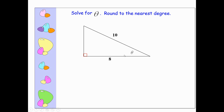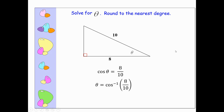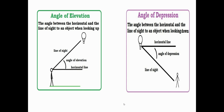When finding an angle measure, if I have the adjacent side of 8 and the hypotenuse of 10, that gives cosine of theta equals 8/10. Take cosine inverse of both sides — theta equals cosine inverse of 8/10 (you can simplify to 4/5 or leave it as 8/10). Check that you're in degree mode since the directions ask for the nearest degree. You'll get theta equals 36.869897, which rounds to 37 degrees. Always label your answer as degrees or radians depending on what you calculated.